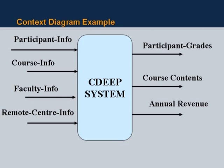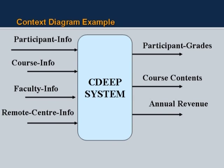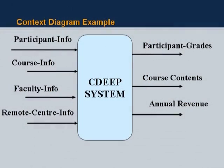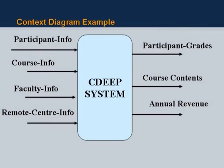Here is a context diagram example for our center for distance engineering education program. We conduct these programs and beam courses live through satellite to various centers. We need information about those remote centers — where they are located, how many students could be there, what courses are offered, what labs they have. We need information about participants on any course, the basic information about courses offered by our center, when they are offered, any prerequisites, and which faculty members are associated with teaching those courses.